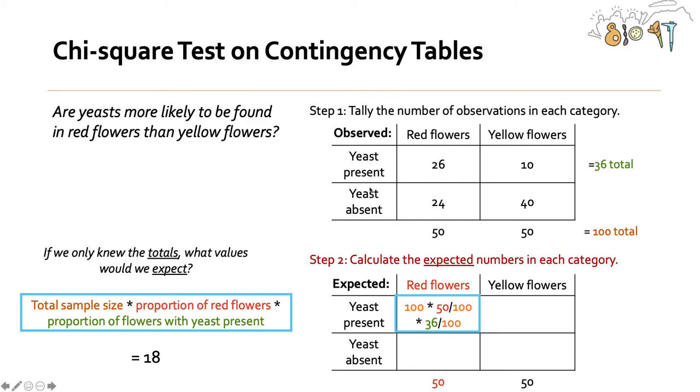All right, so we tallied our observations in each category. So there's 50 red flowers that we looked at, 50 yellow flowers, 36 flowers had yeast, and 64 did not have yeast. We looked at 100 flowers total.